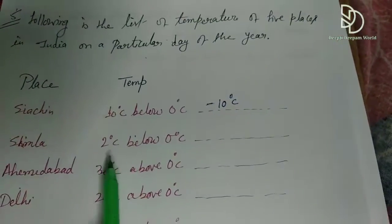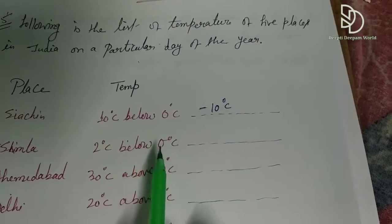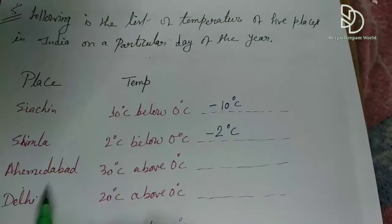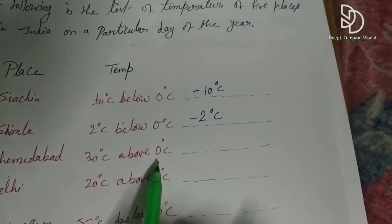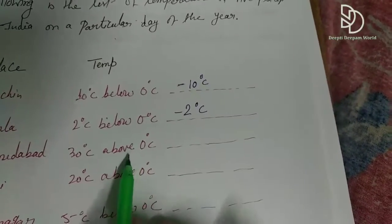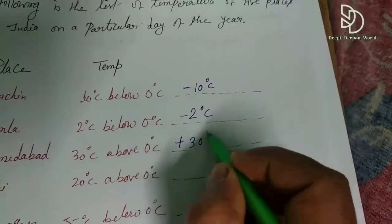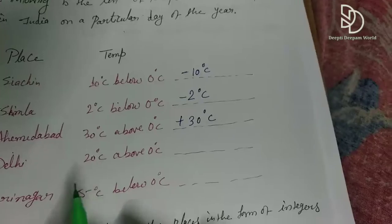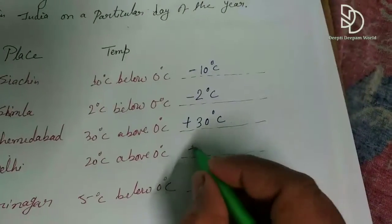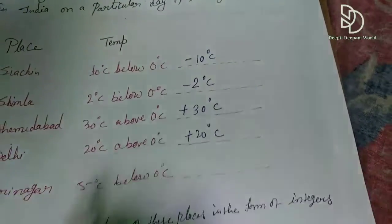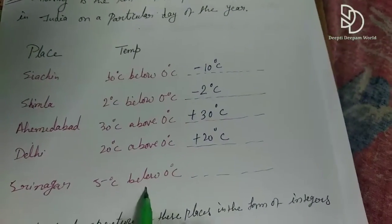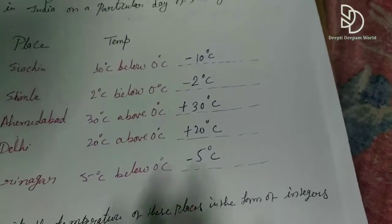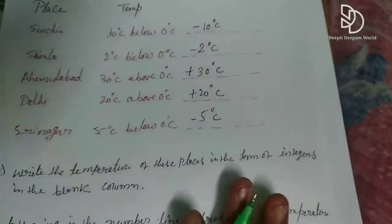The second place is 2 degrees Celsius below 0 degrees Celsius, which is minus 2 degrees Celsius. Third, Ahmedabad is above 0, so it is plus 30 degrees Celsius. Then Delhi is 20 degrees Celsius above 0, so plus 20 degrees Celsius. The fifth place is 5 degrees Celsius below 0, so minus 5 degrees Celsius. We have now set all temperatures in integer form.